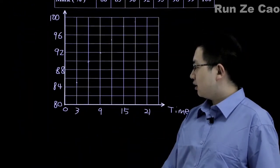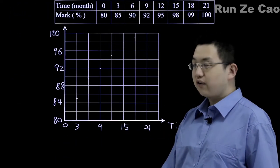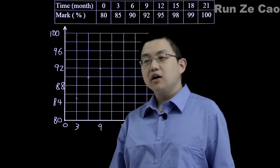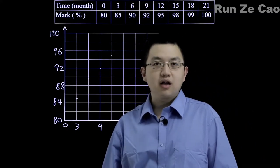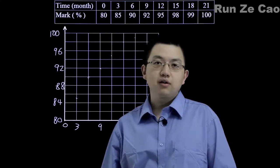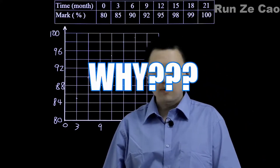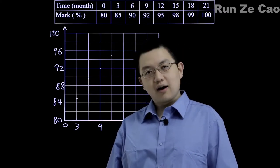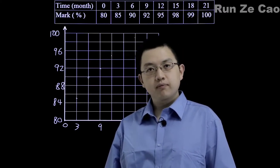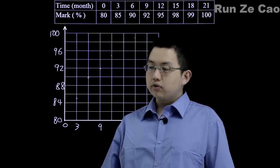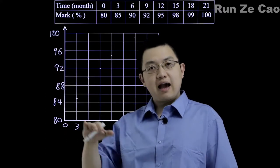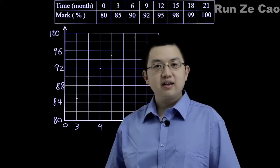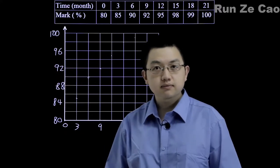Averages tend to reduce the effect of outliers as long as the set of numbers is not too large. Consider average family income — really rich families will drag the average up far more than is actually the case.